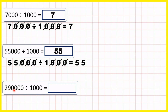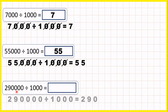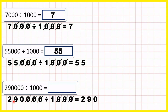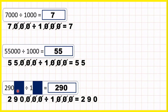Now 290,000 divided by 1,000 — here we have to be careful. We have four zeros on the end of our number, but in 1,000 we only have three end zeros, so we can only cancel three of our end zeros. So 290 divided by 1 is 290, and that's our answer. We're cancelling three end zeros because there are three end zeros in 1,000.